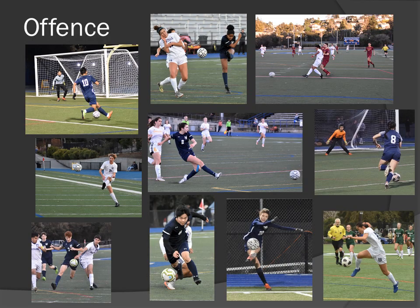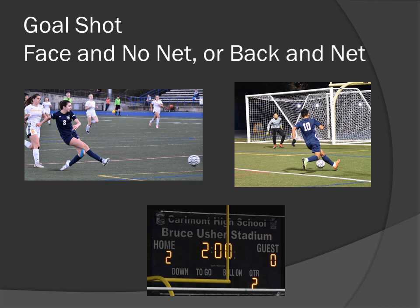Various offense pictures. For a goal shot, it's a compromise between face and no net, or back and net. Picture left: you have her face and the ball from the kick, but you don't have the net. Picture right: you've got the ball and the net, but you can't see his face. This depends on where you are versus where the player is — if the player is further out than you, you get her face but not the net; if the player is closer to the net than you, you get the net but only his back.